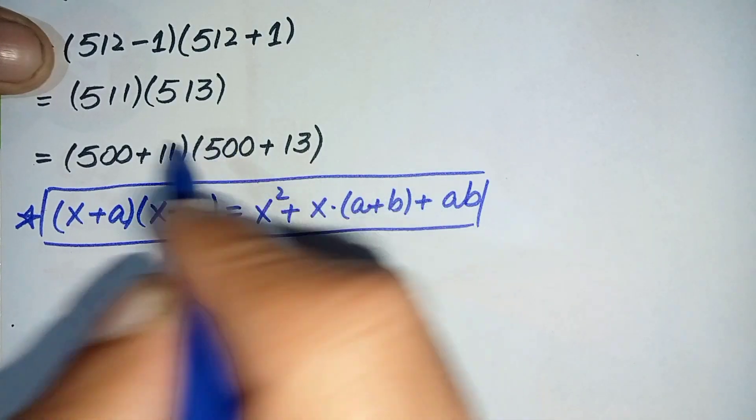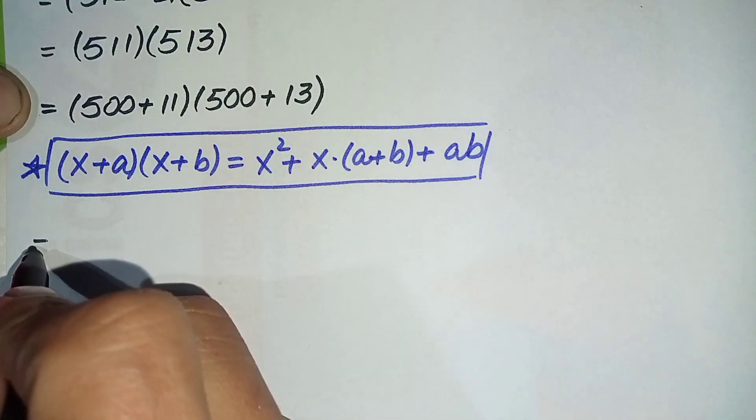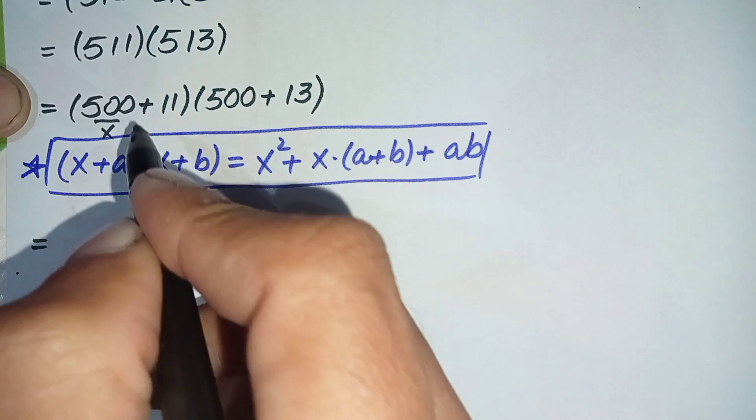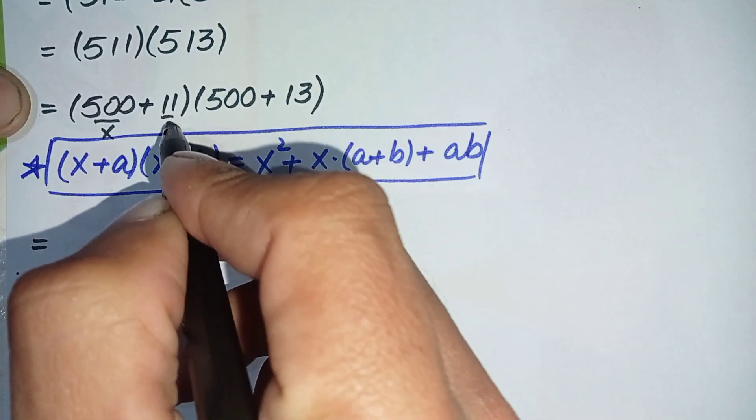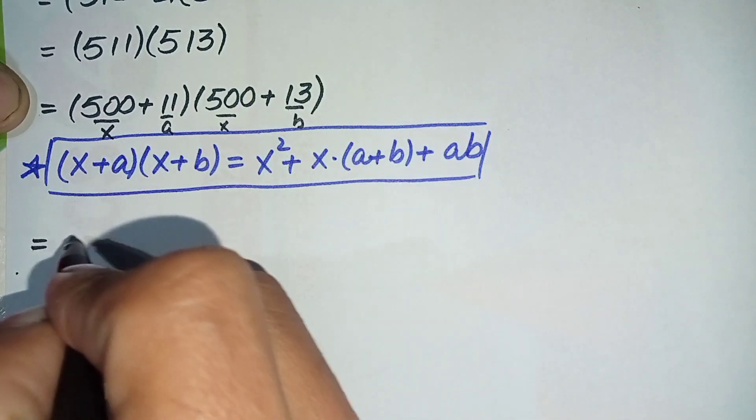x squared. So here x is 500, a is 11, this is x and this is b. So it will become x squared, which is 500 squared, plus x which is 500 times...